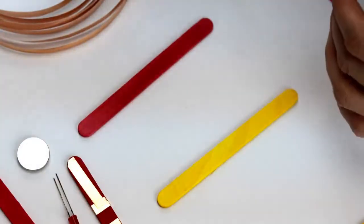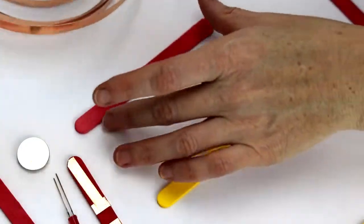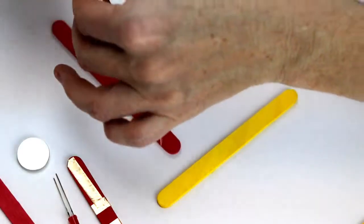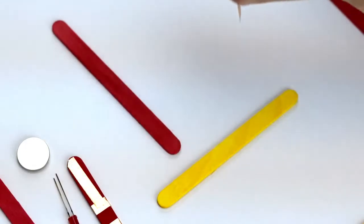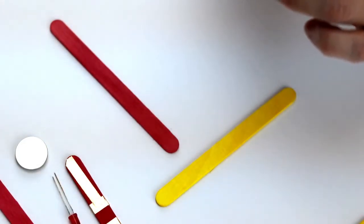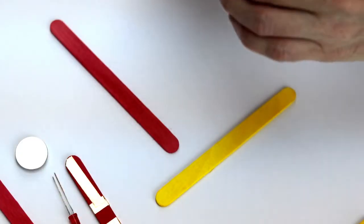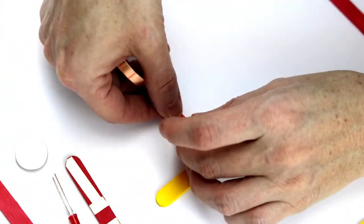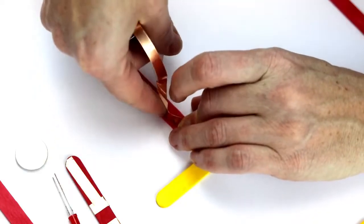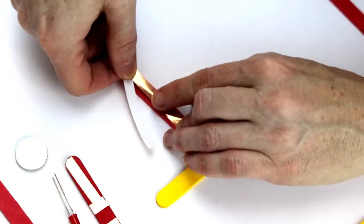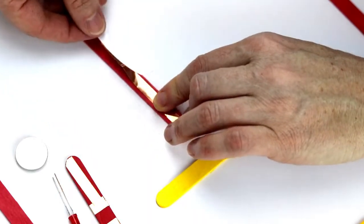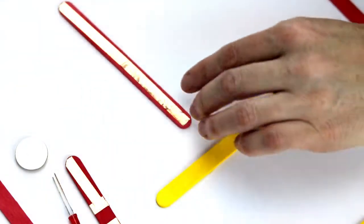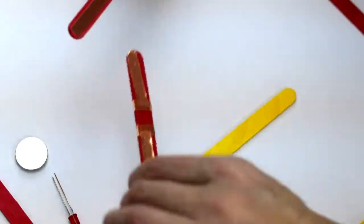So for this one, we just want one long strip of copper tape going all the way from top to bottom. So I'm just going to take a quick measurement. Snip it. Now because copper tape does like to curl back on itself, you might want to leave some of the paper backing on and then start by sticking it and then slowly peeling it off. There we go. So we have our copper tape on those two.